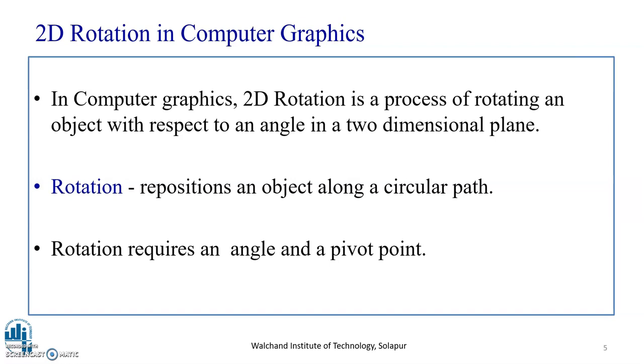Most of us use cell phones daily. We see built-in features of rotation by 90 degree towards the left or right. So what is this 2D Rotation? In Computer Graphics, 2D Rotation is a process of rotating an object with respect to an angle in the two-dimensional plane. Rotation repositions an object in a circular path. Rotation requires an angle and a pivot point.